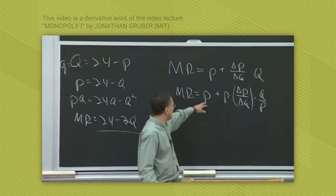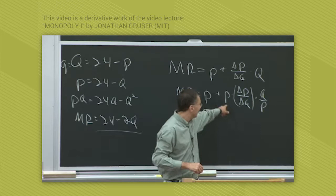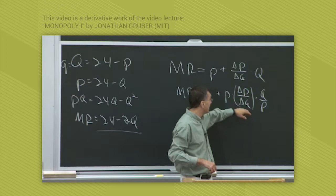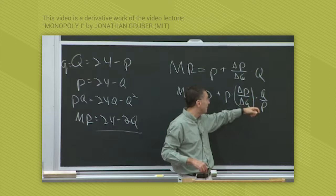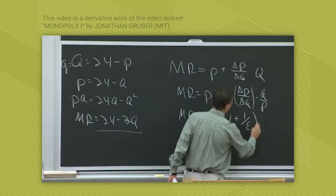I just took the second term and multiplied and divided by P. The reason I did that is because this now starts to look like an elasticity expression — specifically, the inverse of an elasticity expression. Remember, elasticity of demand is delta Q over delta P times P over Q. So that second term is the inverse of the elasticity of demand, and we can rewrite this as marginal revenue equals P times 1 plus 1 over the elasticity of demand.